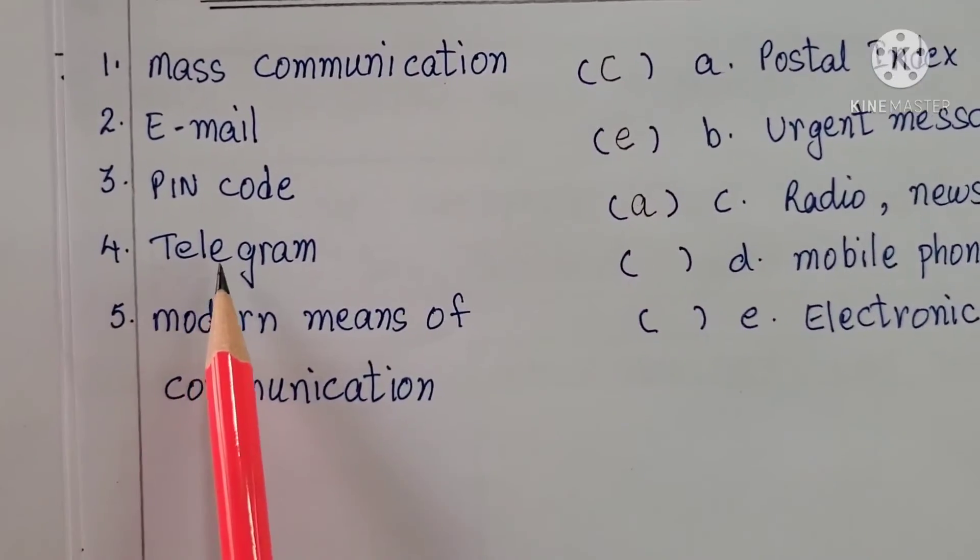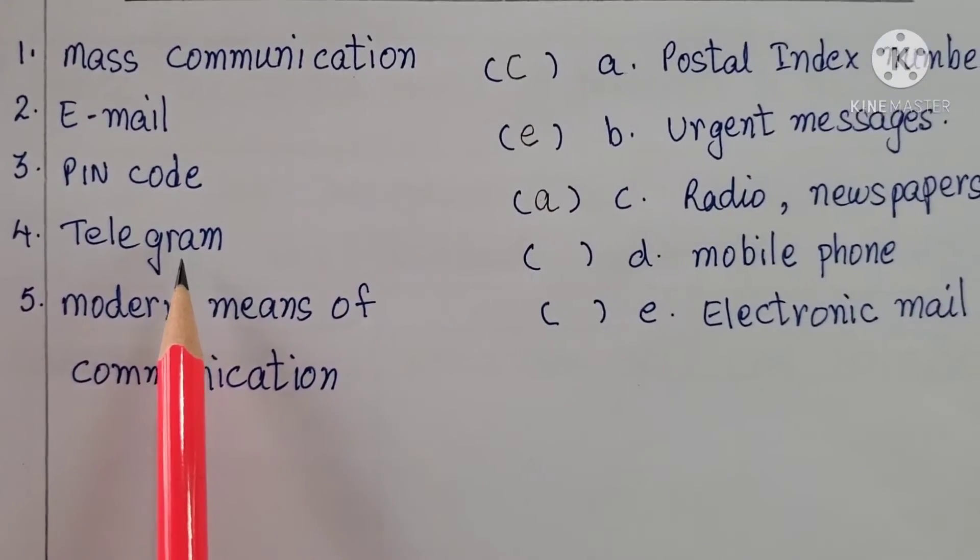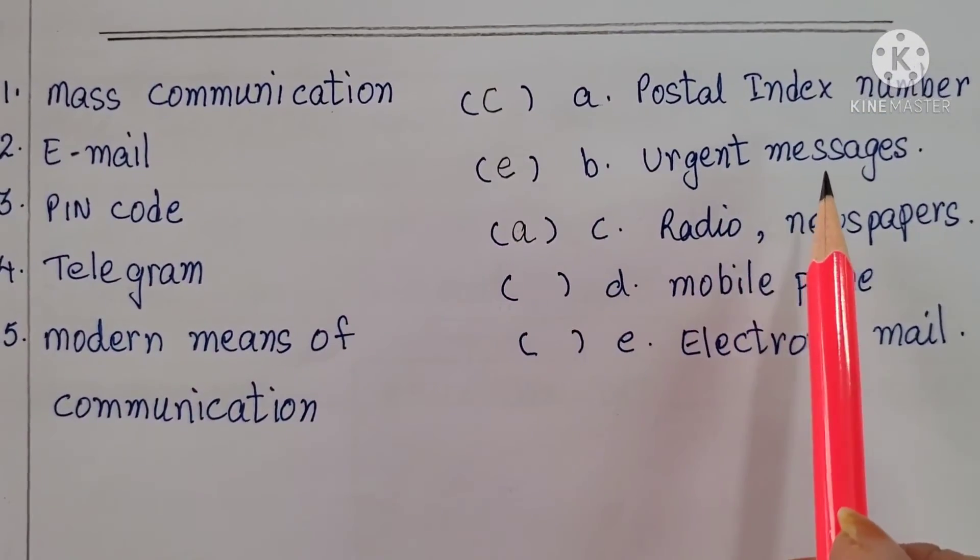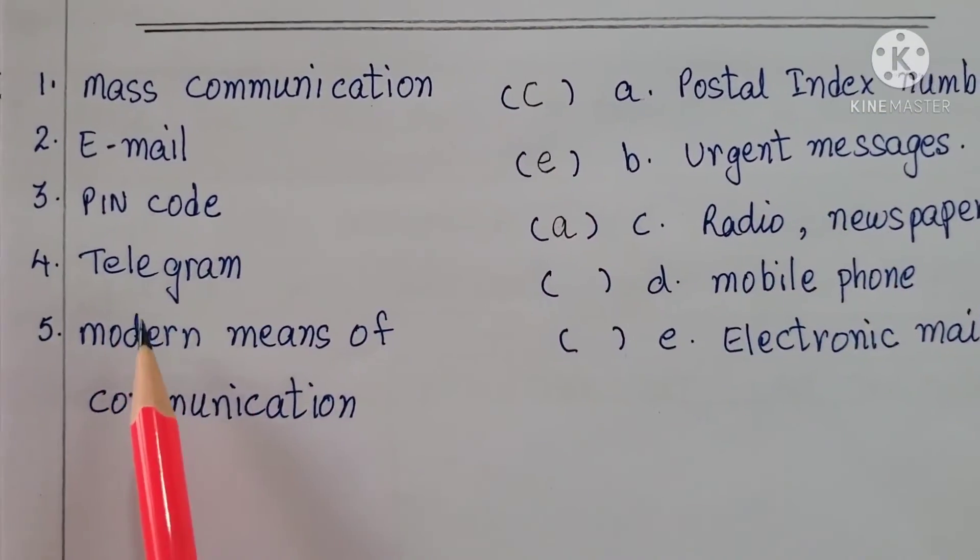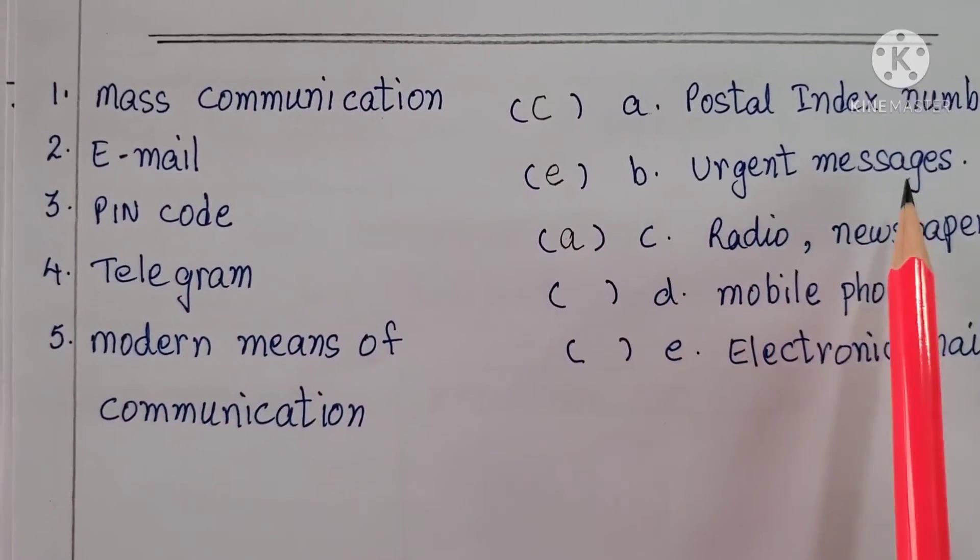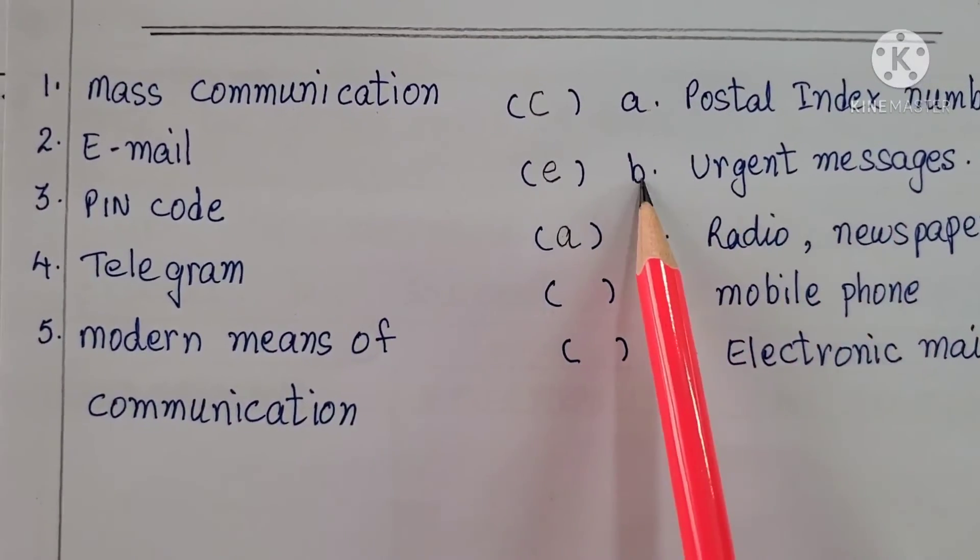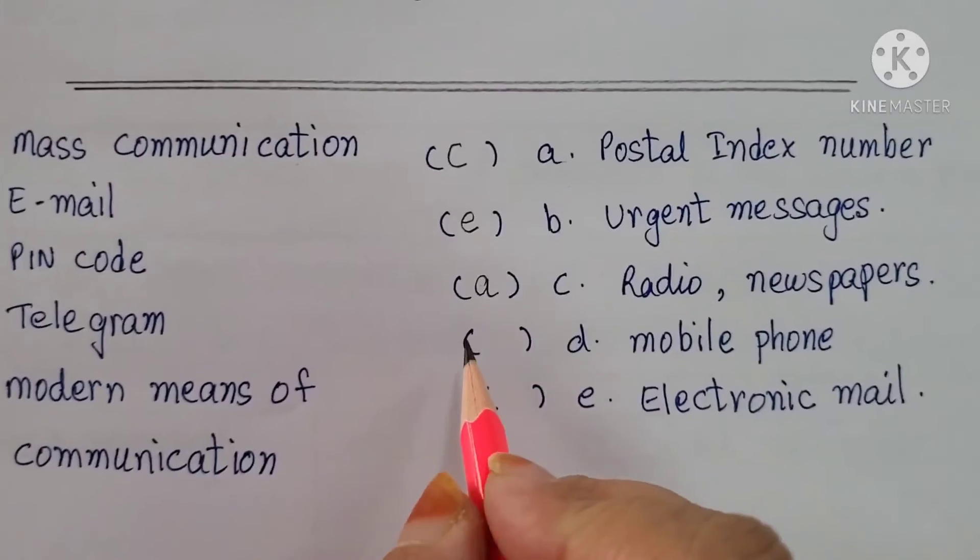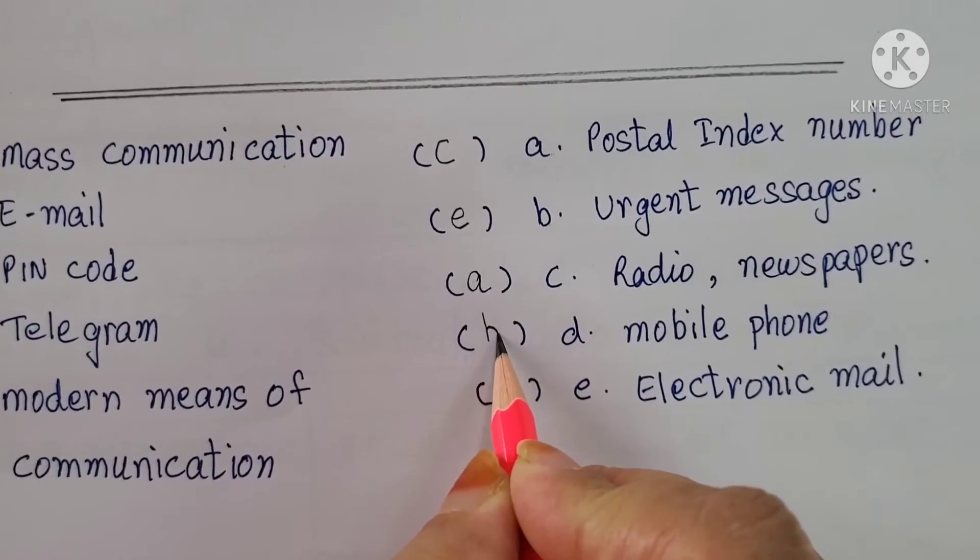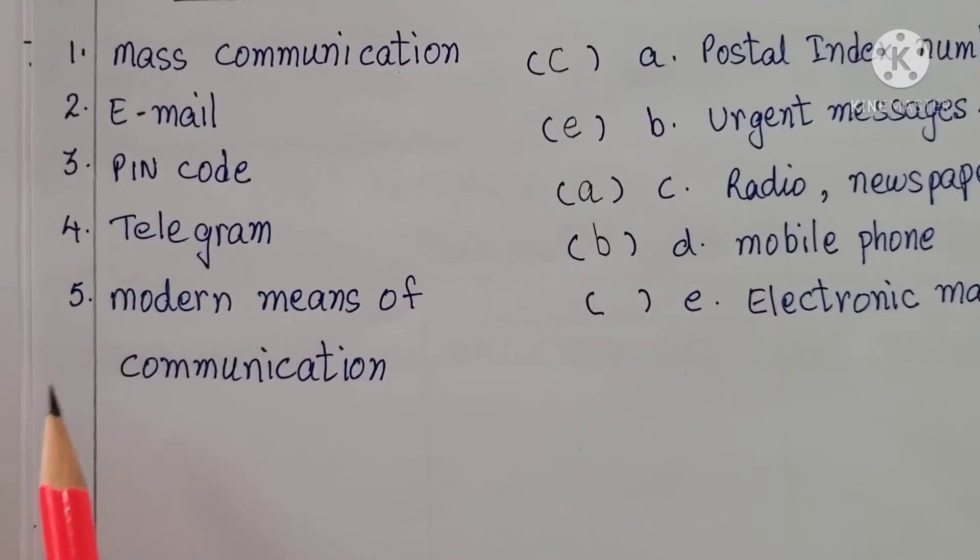Fourth one. Telegram. What is telegram? Urgent messages. What is telegram? Urgent messages. So which alphabet is here? B. So it's matching with B.